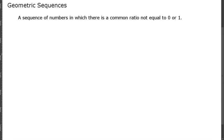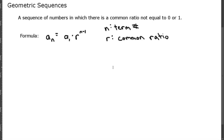In a geometric sequence there is a common ratio. The formula for a geometric sequence is: a sub n — some term n — is equal to the first term a sub 1 times the common ratio r to the n minus 1, where n minus 1 is the previous term number.